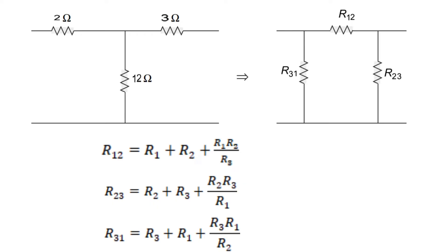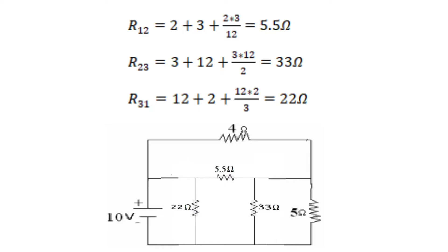Using these formulas we can change the star circuit — 2 ohms, 3 ohms, 12 ohms — to delta resistors R12, R23, and R31. Therefore R12 equals 2 plus 3 plus (2 × 3)/12. We can redraw the circuit as shown in the figure.